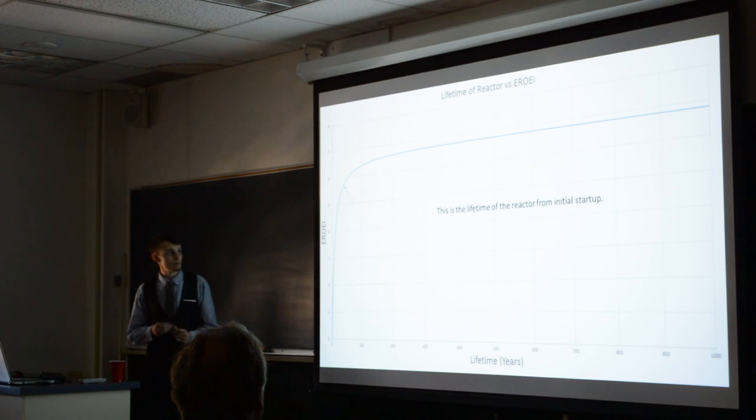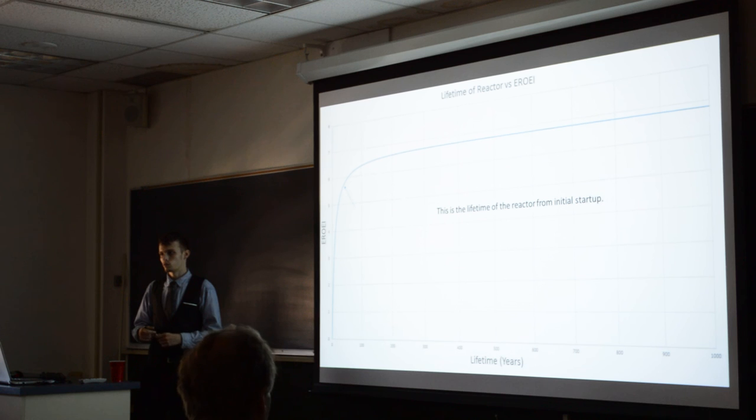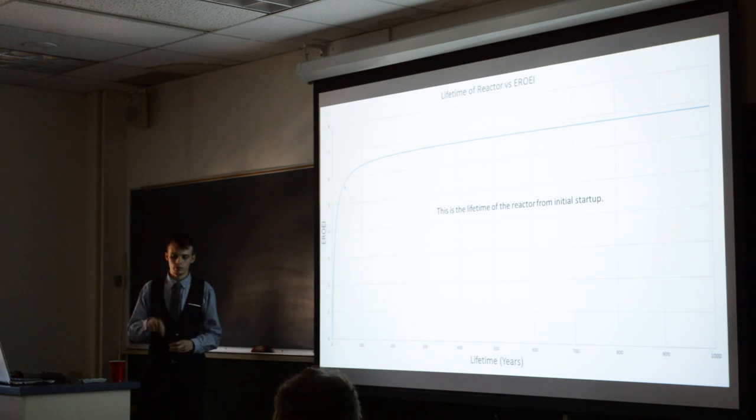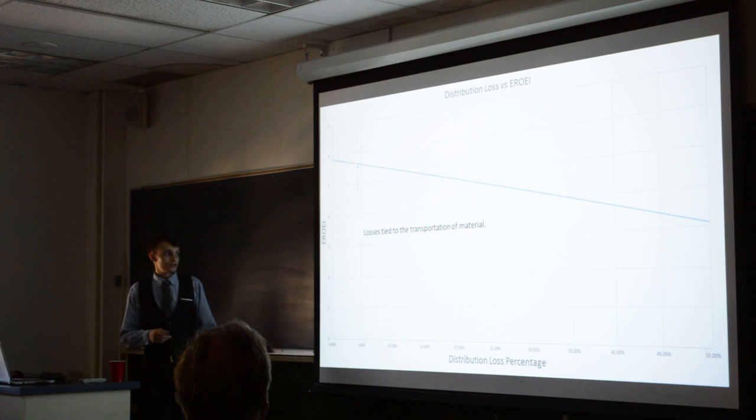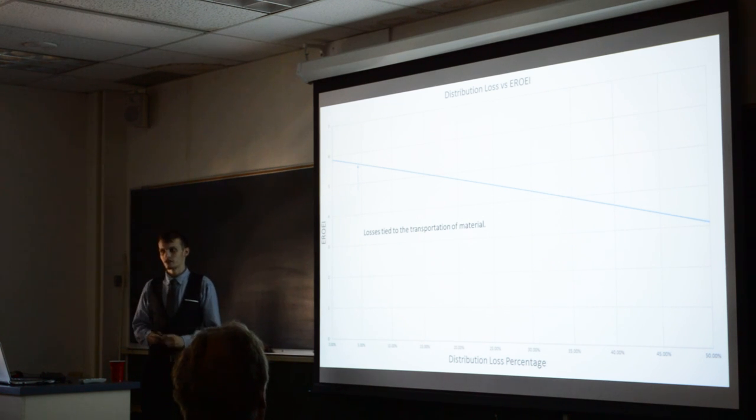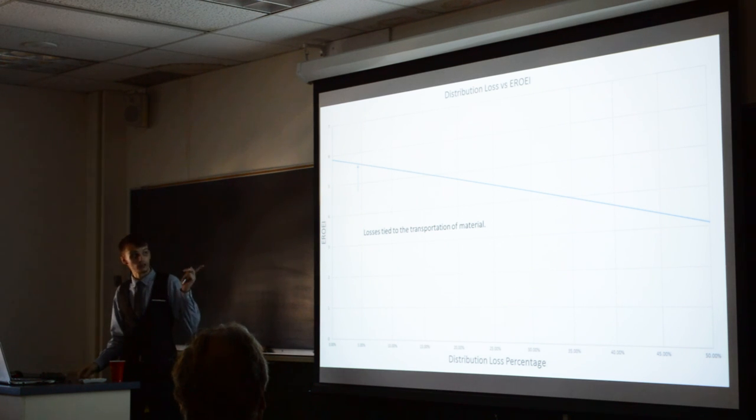The lifetime of the reactor doesn't make much difference after about 50 years or 100 years. As it runs, it's basically paying back what it cost to build it and also paying back what has to be done after it's done working. The distribution loss is just stuff that gets lost between point A and point B. And as Dr. Kari joked, the only way it could go all the way down here is if somebody just straight up stole all of the material. It was funny. Also, it's the only linear graph.